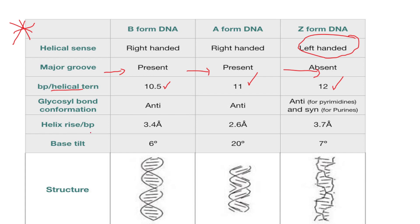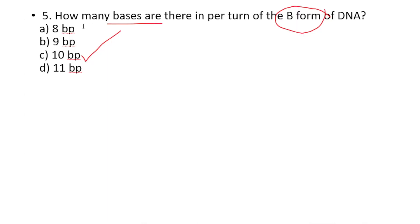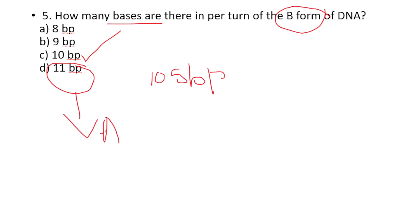The helical rise per base pair: B form of DNA is 3.4 angstroms, A form is 2.6 angstroms, and Z form is 3.7 angstroms. Base tilt: B form is 6 degrees, A form is 20 degrees, and Z form is 7 degrees. The most common types of DNA are A form and B form. B form has approximately 10.5 base pairs per turn, A form has 11, and Z form has 12 base pairs per helical turn.